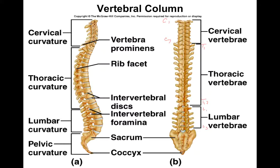The vertebral column has natural curves to it. The cervical curvature is an anterior curvature — it curves towards the front — whereas the thoracic curves towards the back, so it's a posterior curvature. The lumbar curvature is towards the front, and the pelvic curvature is towards the back. The sacrum and the coccyx make up the pelvic curvature.